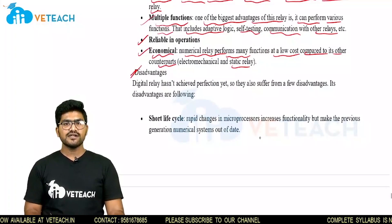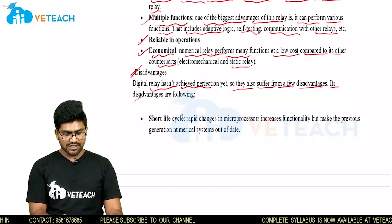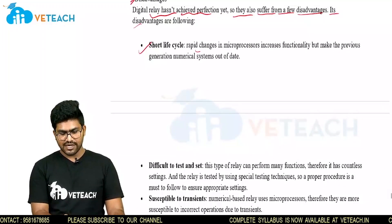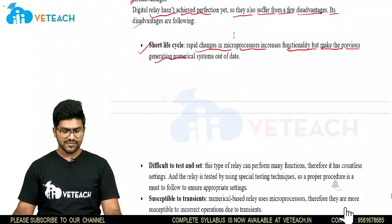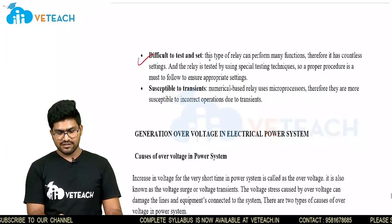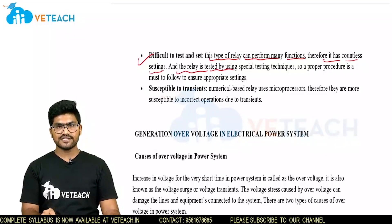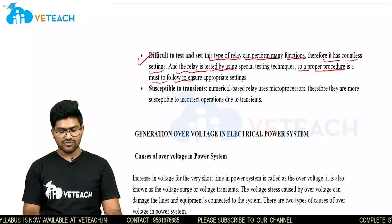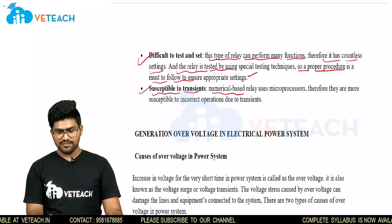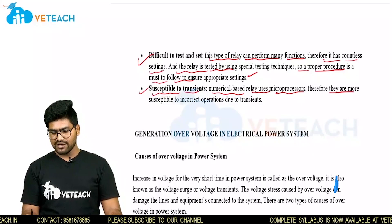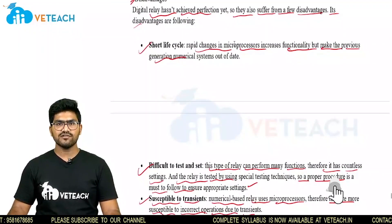Coming to disadvantages — digital relays have not achieved perfection yet and suffer from a few disadvantages. The first is short life cycle: rapid changes in microprocessor technology increase functionality but make previous generation numerical systems outdated. Next is difficult to test and set — this type of relay can perform many functions, therefore it has countless settings and the relay is tested using special testing techniques; a proper procedure must be followed to ensure appropriate ratings. The last disadvantage is susceptibility to transients: numerical based relays use microprocessors, and therefore they are more susceptible to incorrect operation due to transients. This concludes the topic on numerical relays. Thank you.